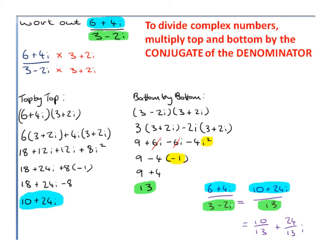Putting them back together: the numerator is 10 plus 24i and the denominator is 13, giving us (10 plus 24i) over 13. We simplify by writing 10 over 13 as the real part and 24i over 13 as the imaginary part, leaving both as improper fractions.